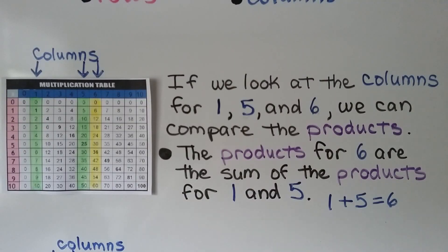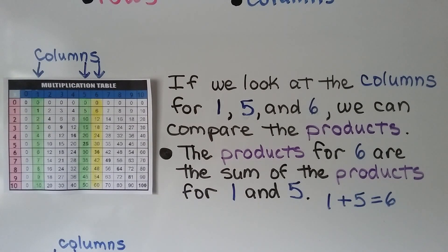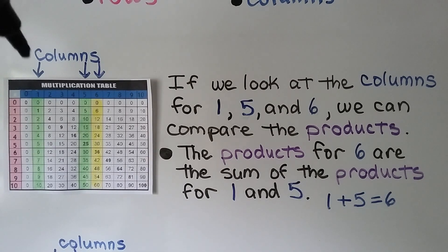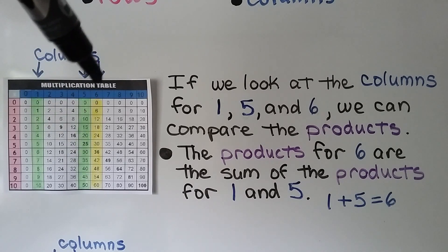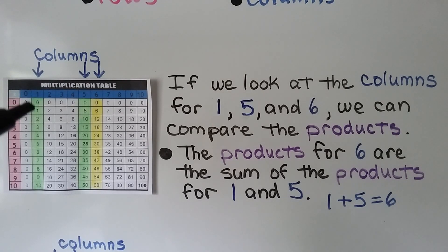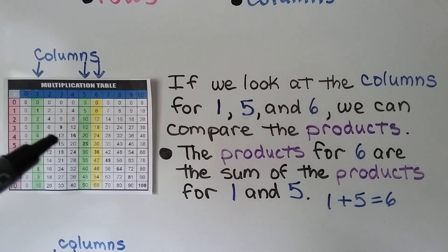If we look at the columns for 1, 5, and 6, we can compare the products. The products for 6 are the sum of the products for 1 and 5, because 1 plus 5 equals 6. So the products for 6 are equal to the sum of the 1s and the 5s. For example, 2 times 1 is 2, 2 times 5 is 10, and 2 times 6 is 12 — and 2 plus 10 equals 12.